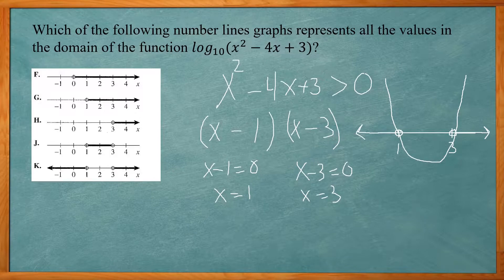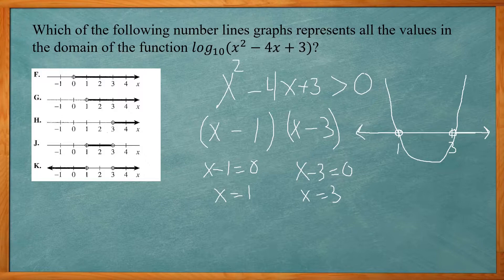So if we look at our graphs over here, answer choices f, g, h, j, and k. So it has to be open circle at 1 and going to the left, open circle at 3 and going to the right. So our answer choice k is the correct one.